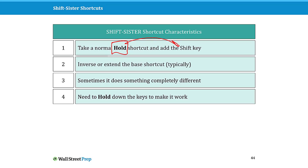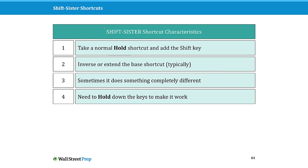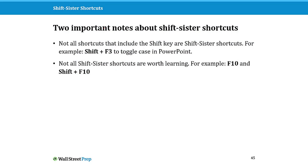So what is a shift sister shortcut? A shift sister is simply taking a hold shortcut and adding the Shift key. This makes them ridiculously easy to learn. When you do that, you're either inversing or extending the base shortcut. There are also shift sister shortcuts that do something completely different. The last thing to know is that you still need to hold them down — these are still hold shortcuts.